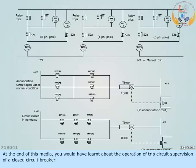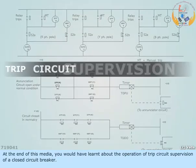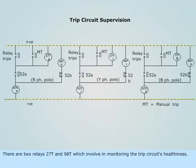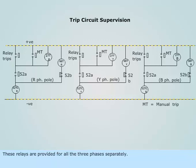At the end of this media, you would have learnt about the operation of trip circuit supervision of a closed circuit breaker. There are two relays, 27T and 98T, which are involved in monitoring the trip circuit's healthiness. These relays are provided for all three phases separately.